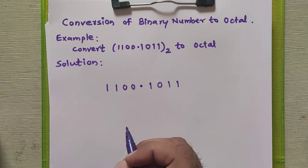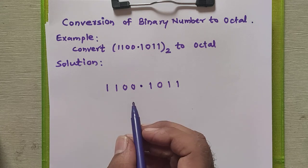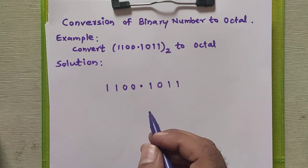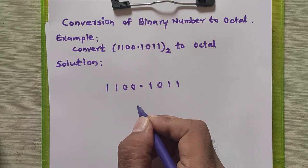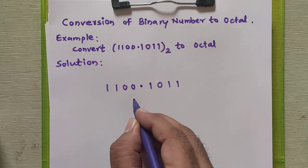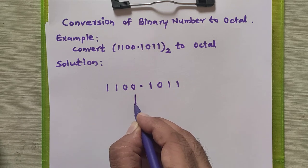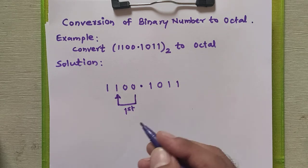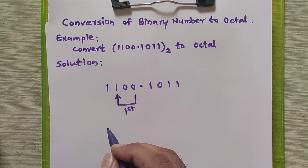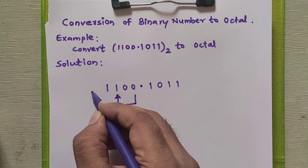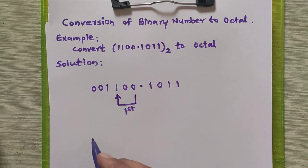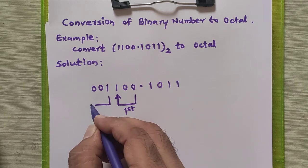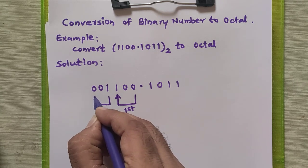We need to form a group of three binary bits, and then we have to obtain the decimal equivalent of it. For the integral part, we go from the unit split digits. This is our first group. For this single one, to form a group of three we need to prefix two zeros, and then it becomes three binary bits. If you put zero in front of any number there is no change to the given number, so this is our second group.